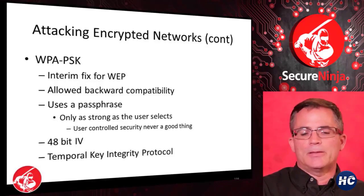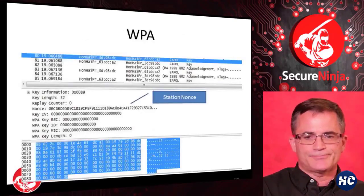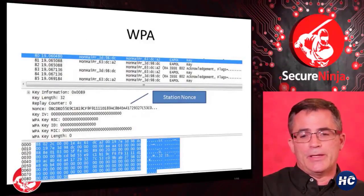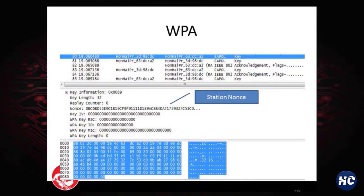WPA uses TKIP — Temporal Key Integrity Protocol — but there have been weaknesses found in it, so TKIP is no longer recommended. When looking at a WPA trace, you'll see the four-way handshake, consisting of four EAPOL (Extensible Authentication Protocol over LAN) key frames. That four-way handshake contains the password or passphrase the user has selected. If I capture this four-way handshake, I can potentially crack it if it's a dictionary word.